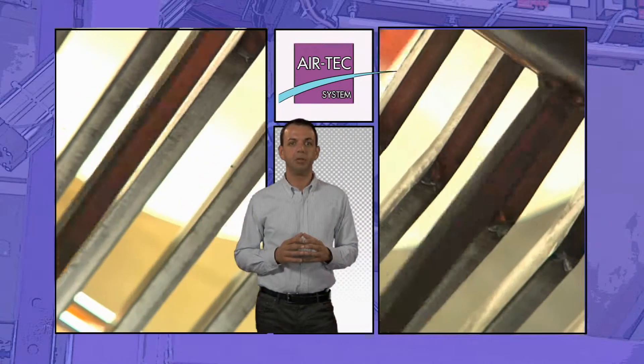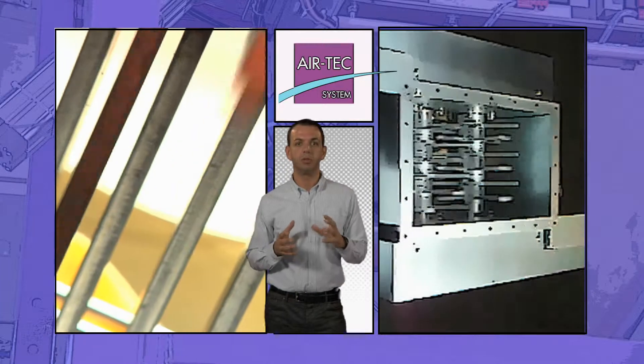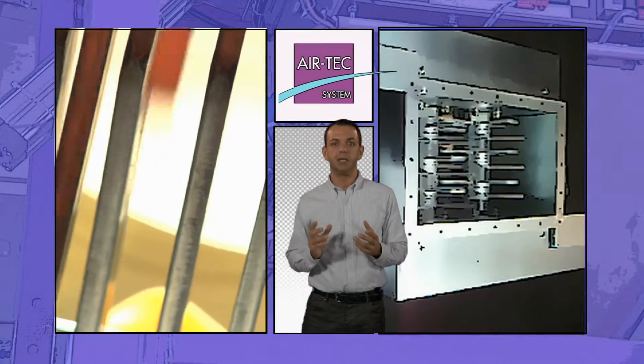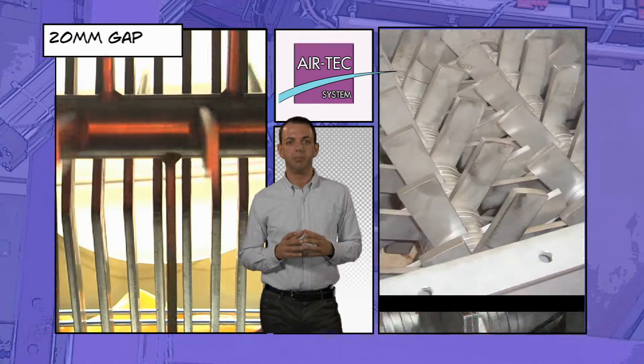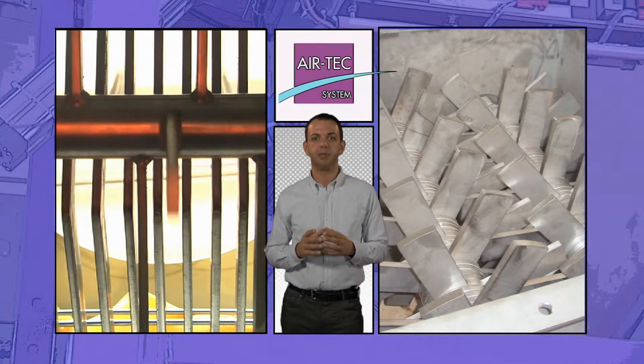When the Lump Breaker is working, the blades rotate in opposite directions to pulverize the lumps. The two sets of blades are separated by a 20 mm gap in order to obtain the maximum level of efficiency in the crushing process.